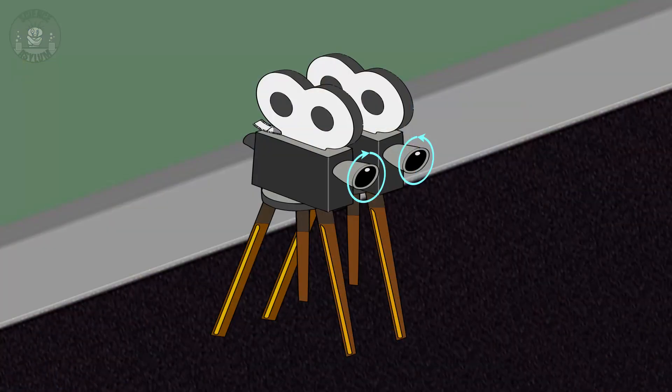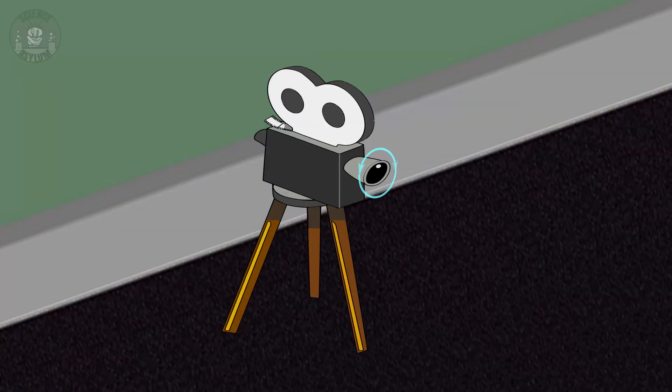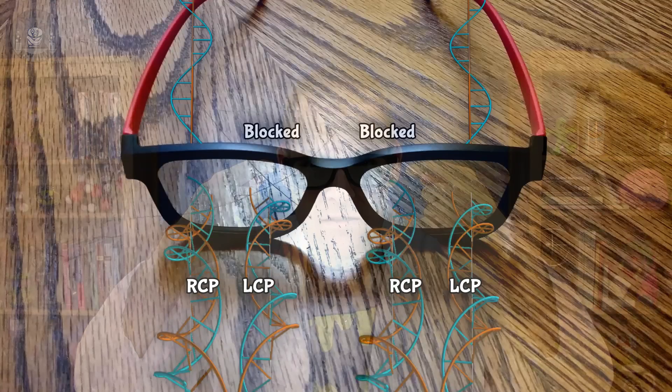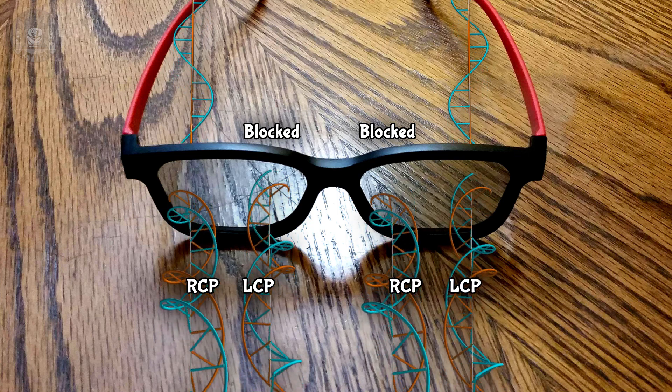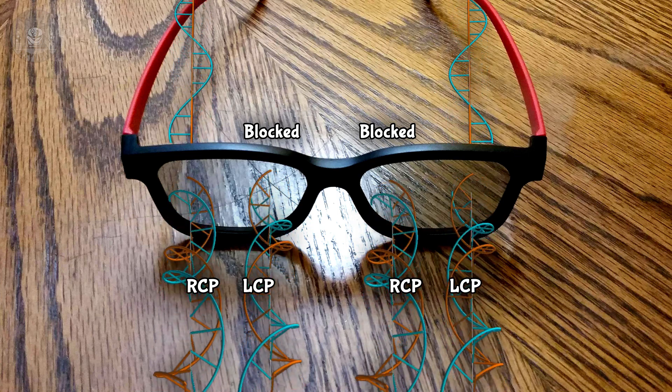It can do that using two projectors or alternating one projector really fast. Both images reflect off the screen and enter your 3D glasses. The clockwise lens blocks the counterclockwise light and vice versa, which only lets one image into each eye.